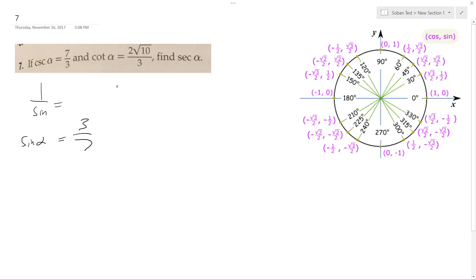So if cotangent is equal to that, that means tangent is equal to 3 over 2 root 10. We can just leave it like this for now.